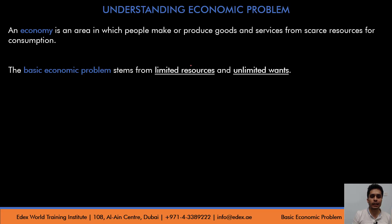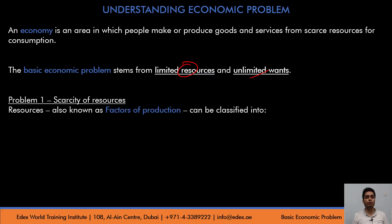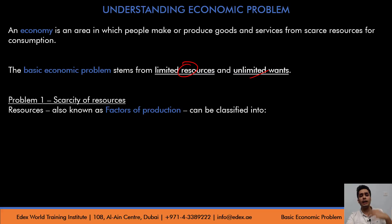First is the limited resources, and second is the unlimited wants. Now let's divide our basic economic problem into four parts. The first part speaks about scarcity of resources. Resources are factors of production that are used in the production of goods and services. In order to produce goods and services, you need certain resources. These resources, also known as factors of production, are scarce in an economy — always limited in nature. You don't have unlimited resources. The factors of production are classified into four subcategories for the purpose of studying economics.